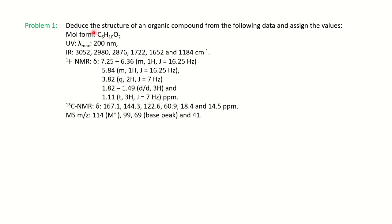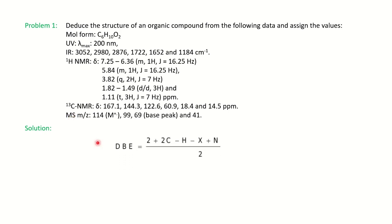You can see the question on the screen: deduce the structure of an organic compound where the molecular formula is given, along with UV, IR, proton NMR, C13 NMR, and mass data. The first step, as we've seen in previous videos, is the calculation of DBE — double bond equivalence — which tells you the presence of unsaturation in your unknown organic molecule. The formula is: 2 plus 2C minus H minus X plus N, divided by 2 (oxygen is ignored).